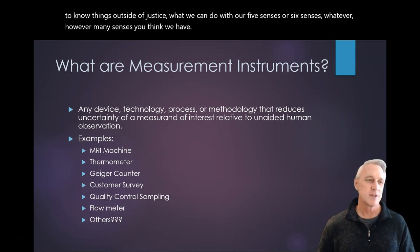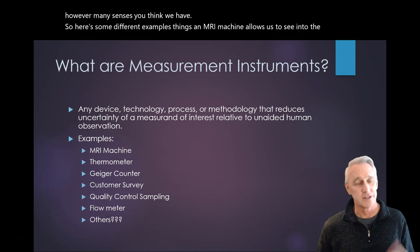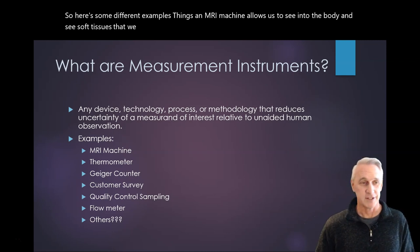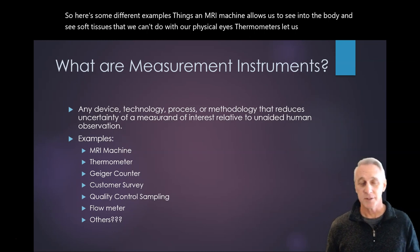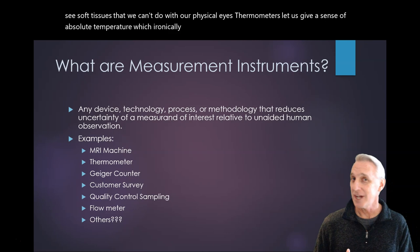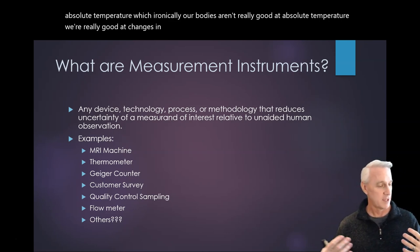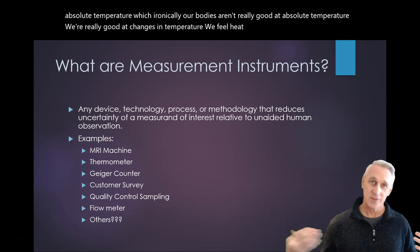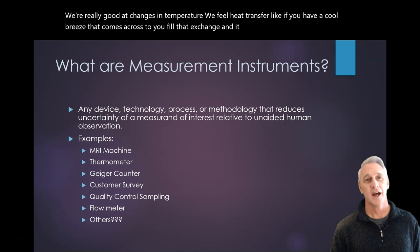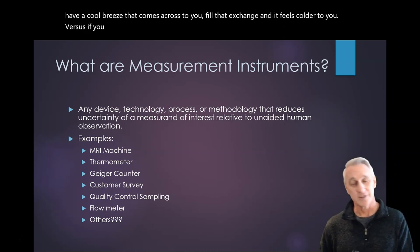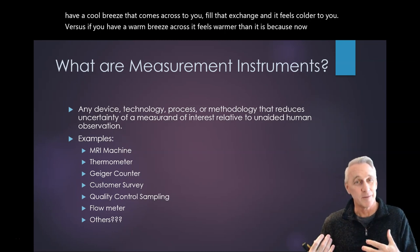Measurement instruments help us extend our senses and our ability to know things outside of just what we can do with our five senses. Here's some different examples. Things like an MRI machine allows us to see into the body and see soft tissues that we can't do with our physical eyes. Thermometers let us give a sense of absolute temperature, which ironically our bodies aren't really good at. We're really good at changes in temperature. We feel heat transfer, like if you have a cool breeze that comes across you, you feel that exchange and it feels colder to you, versus if you have a warm breeze across you, it feels warmer because you're getting heated up from that warm breeze.